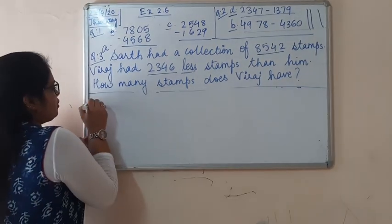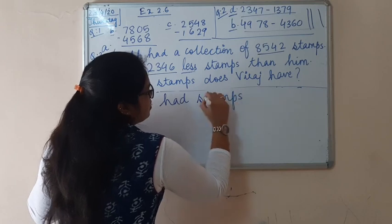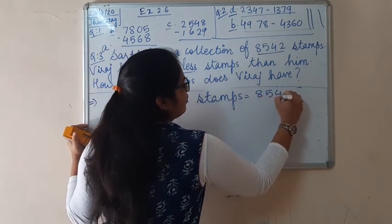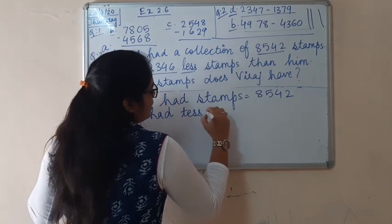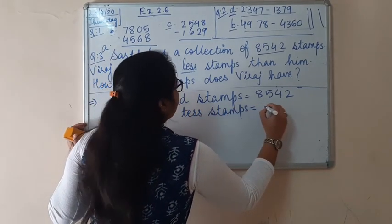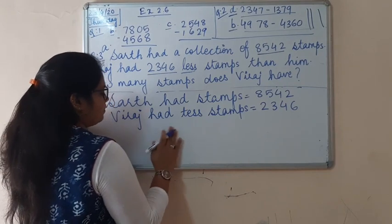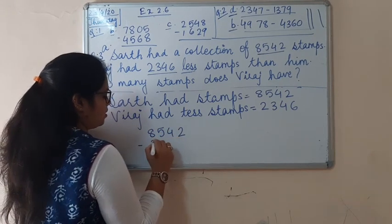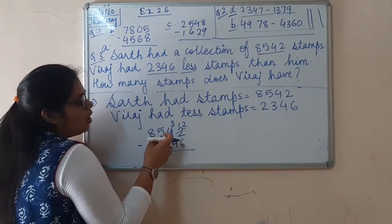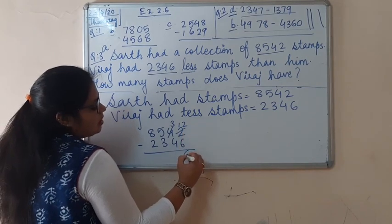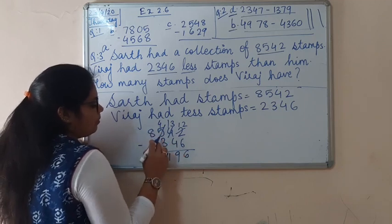So first write down: Sart had stamps — 8,542. Viraj had less stamps — 2,346. Let's subtract now: 8,542 minus 2,346. 2 minus 6 is not possible, so we borrow 1 from 4 — it becomes 3. 12 minus 6 is 6. 3 minus 4 is not possible, so 13 minus 4 is 9. 4 minus 3 is 1. 8 minus 2 is 6.